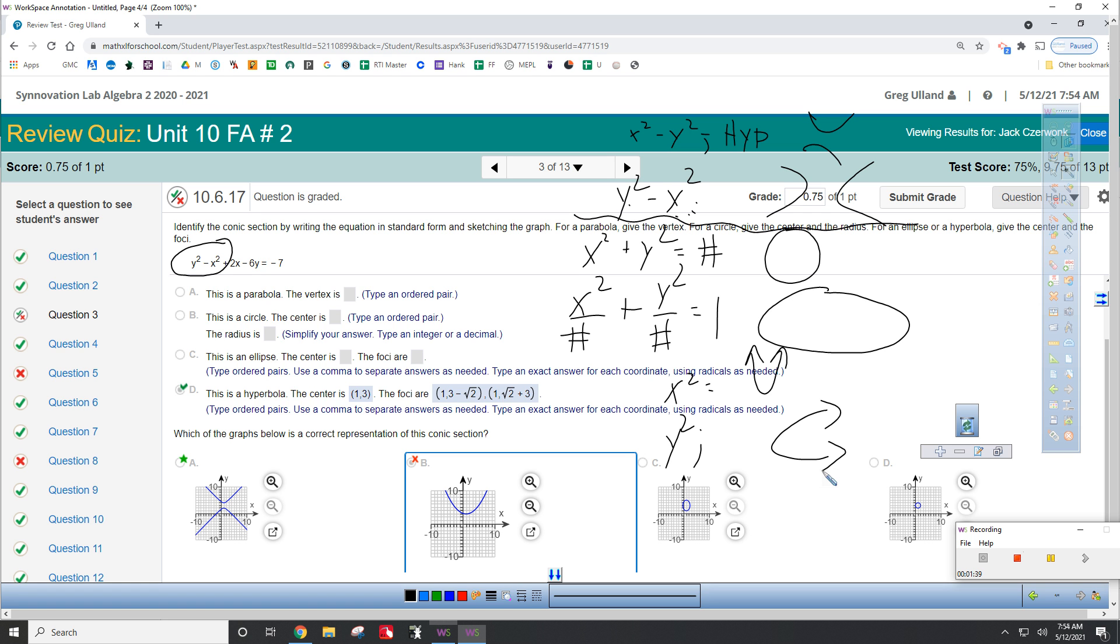On the test, if you're supposed to graph an ellipse and you graph a circle or like a hyperbola, you're going to get most of the points completely wrong. But if you're able to graph the ellipse but you've missed some of the critical points of the ellipse, you'll still get most of the partial credit.